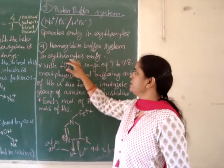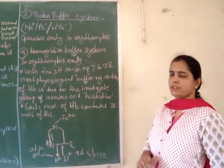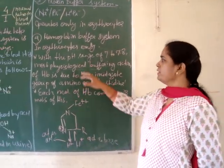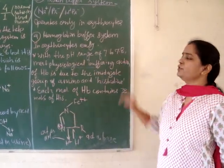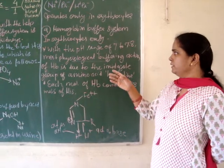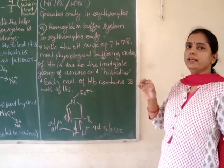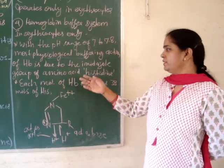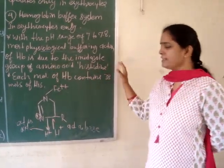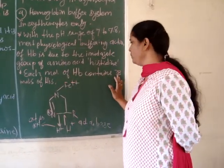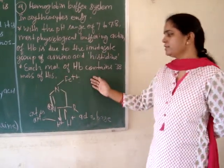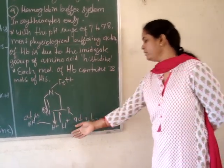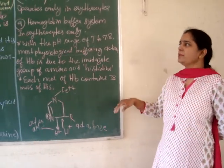The fourth type of buffer system present only in erythrocytes is the hemoglobin buffer system. Hemoglobin is present in erythrocytes, and this buffer system works in the pH range of 7 to 7.8. The main component responsible for the buffering action is the imidazole group present in the hemoglobin structure — specifically the imidazole group of the histidine amino acid. Each molecule of hemoglobin contains 38 molecules of histidine. This structure can donate a proton and act as an acid, or accept a proton and act as a base, helping to maintain the pH of blood.